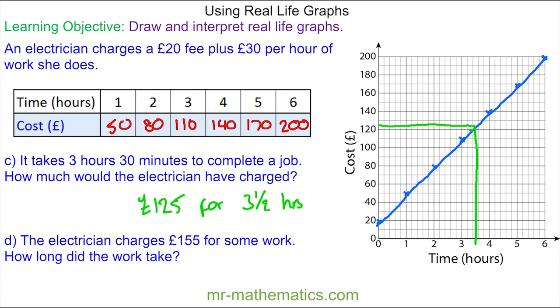And for question D, an electrician charges £155 for some work. How long did the work take? So we go across at £155, which is approximately here, we go to our line and then we go down to the time. So you can see here we have approximately four and a half hours work.